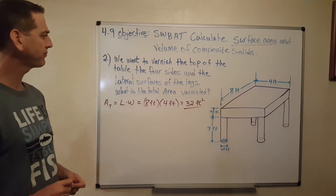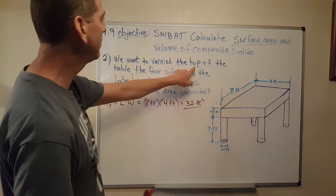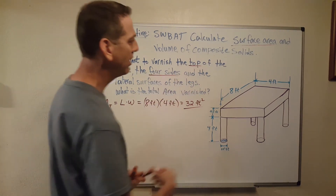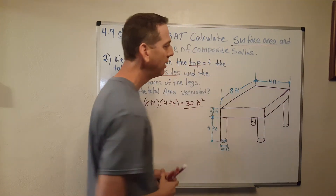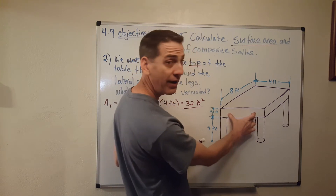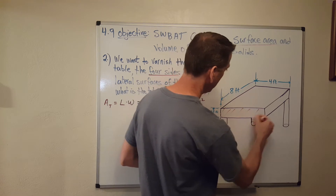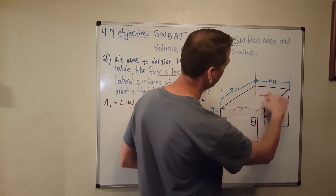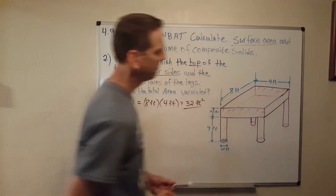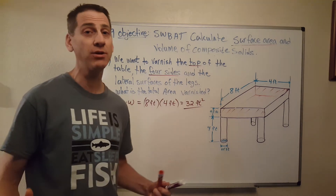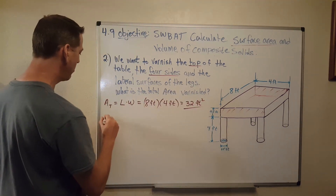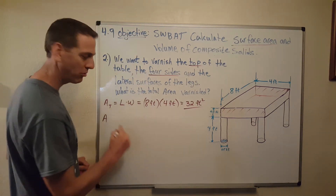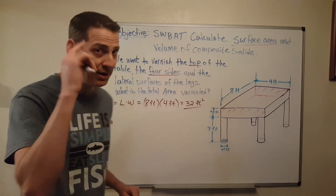I've got the top of the table; now I need the four sides. It's got one face in front, one in the back, and two on the sides. The front face and the back face are identical, so I only need to do one calculation and multiply by two. I'll call that the area of the front and back — using subscript FB — and again that's just a rectangle, so area equals length times width.